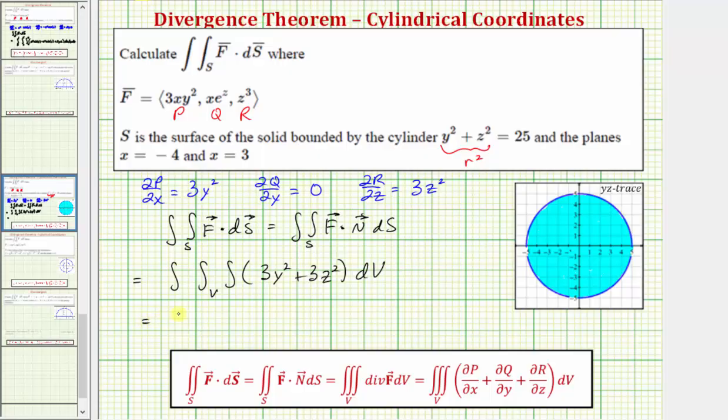So this triple integral is equal to the triple integral of, if we factor out three, we're going to have three times the quantity y² + z², which would be 3r². Then again, differential V is equal to r dx dr dθ.